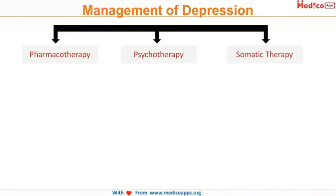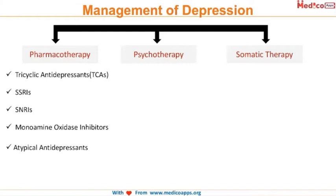Typically, the management revolves around pharmacotherapy, psychotherapy, and somatic therapy. In pharmacotherapy, the major classes of drugs which are used include tricyclic antidepressants, SSRIs, SNRIs, monoamine oxidase inhibitors, and atypical antidepressants.